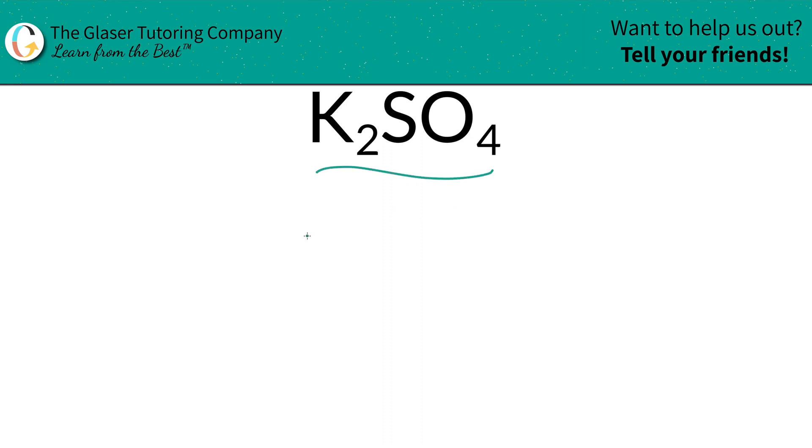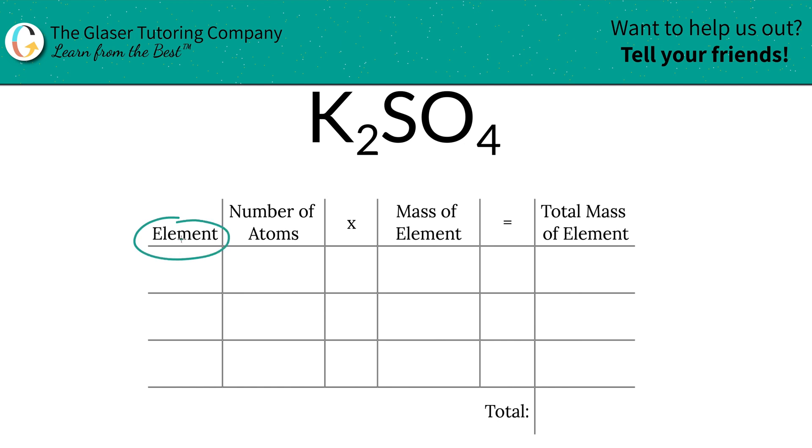I've created a nice little table to help us out. Watch. Bam. So the first step is we're going to write the elements that we see in the compound. So we have potassium, sulfur, and oxygen.